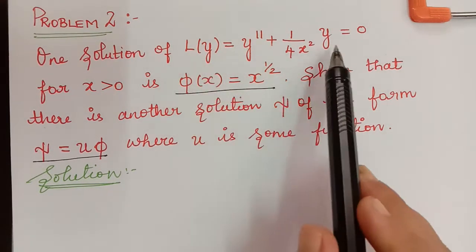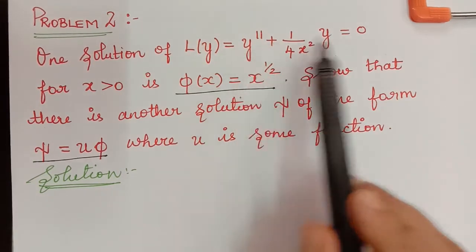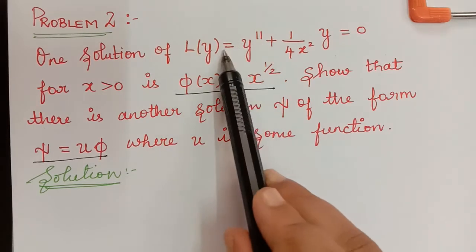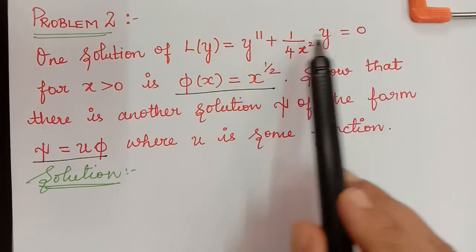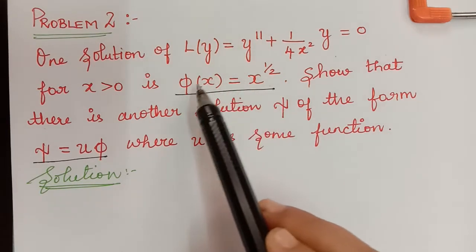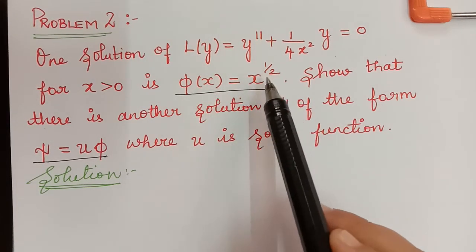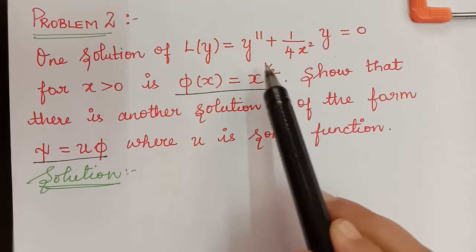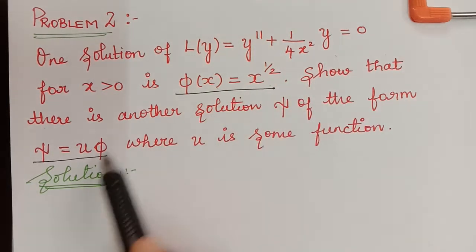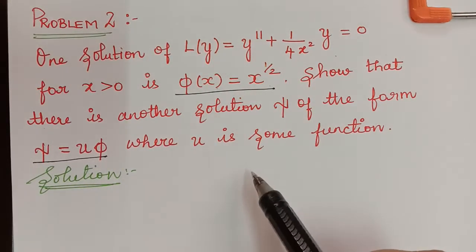This is a second-order linear equation with variable coefficients. The equation will have two solutions; one solution φ(x) = x^(1/2) is already given, and we are asked to find the second solution, which is of the form ξ = uφ. Let us see how to solve this problem.